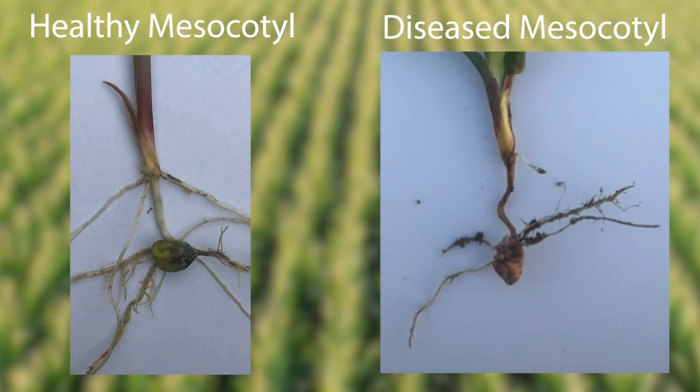The mesocotyl is an important part of a seedling plant. This is the underground stem that connects the seed and primary root system to the plant at the point where the nodal roots are forming. If the mesocotyl becomes diseased, it can be extremely difficult for a plant to smoothly and successfully transition to the nodal root system, as the mesocotyl serves as the pipeline to deliver water and nutrients from the seed and primary roots to the plant until the permanent root system is fully formed.